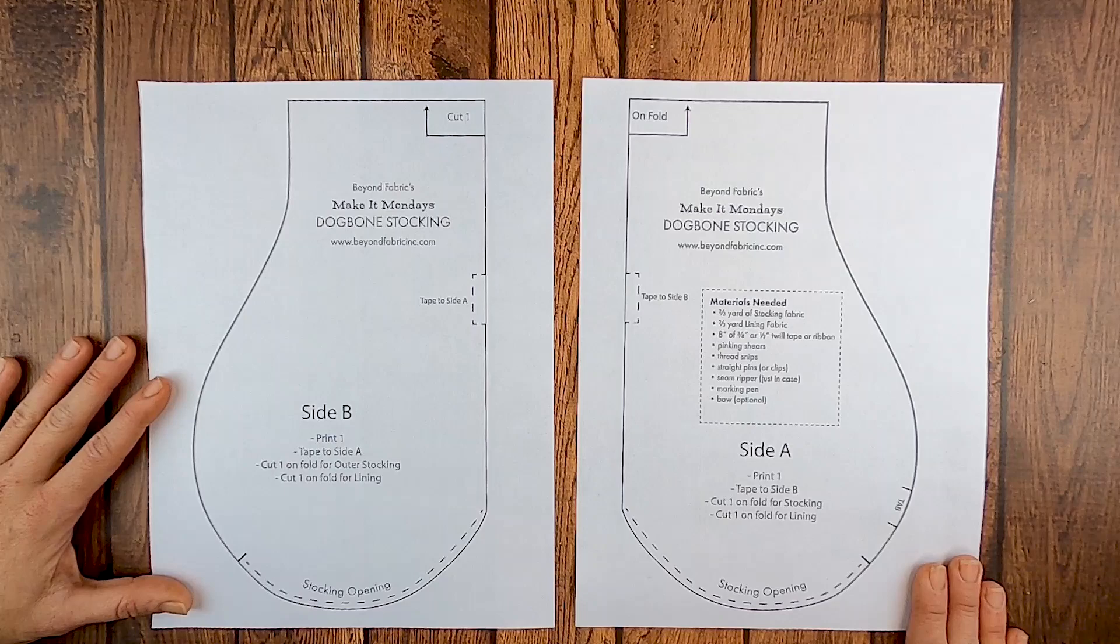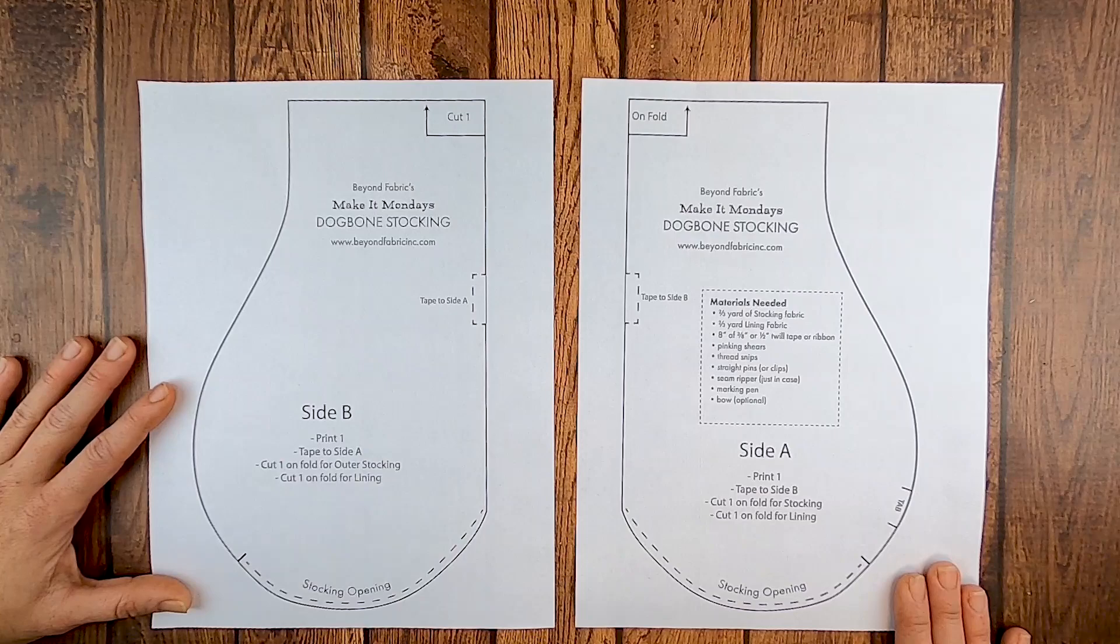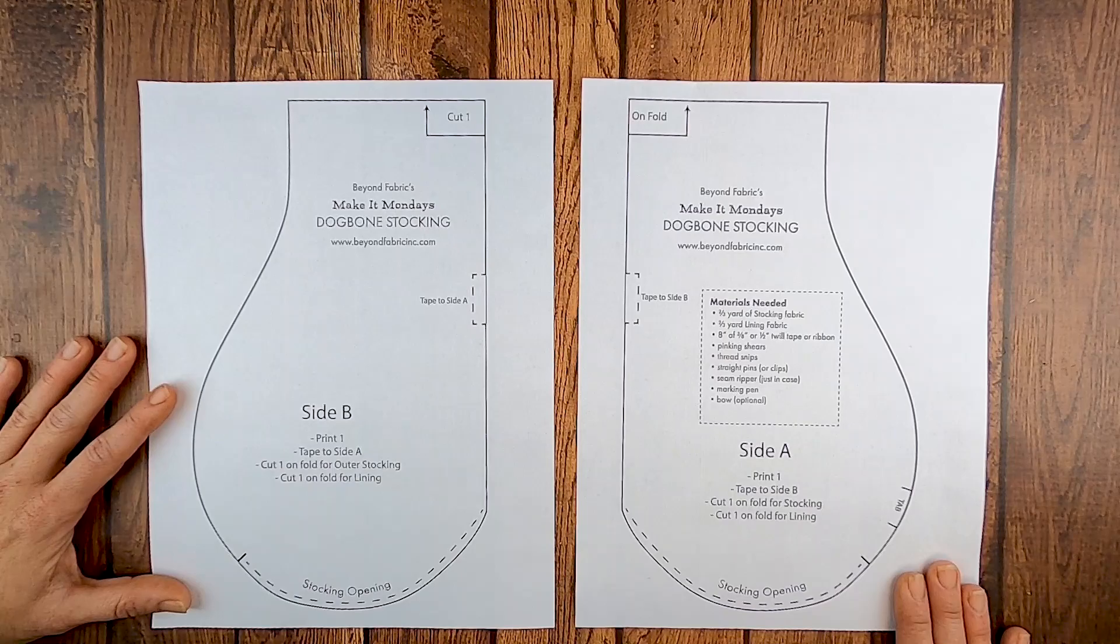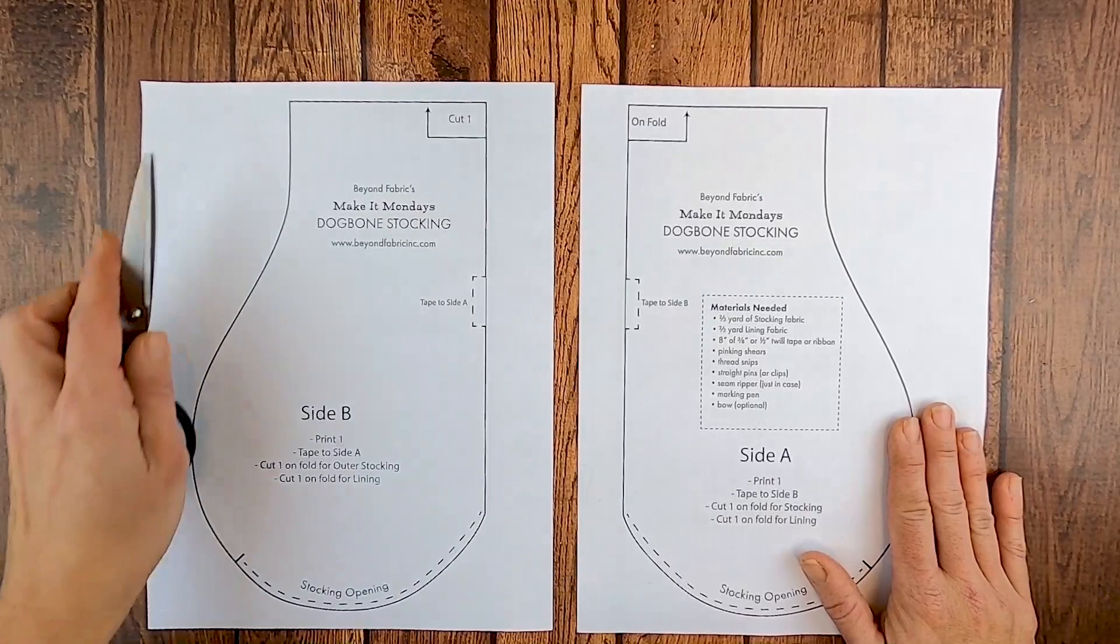They are free demos that we do with Beyond Fabric twice a month on Mondays, and this is our very first virtual one, the dog bone stocking. It was a lot of fun to make, nice and easy, and we show you quite a few little tips and tricks along the way. So today we're going to put this together real quick so that you can get sewing.